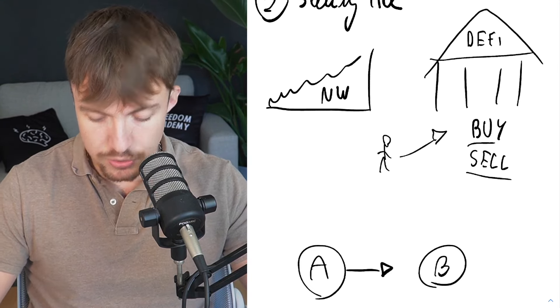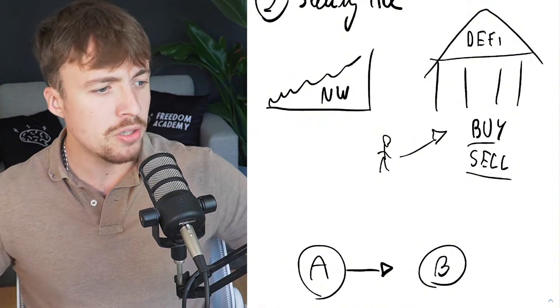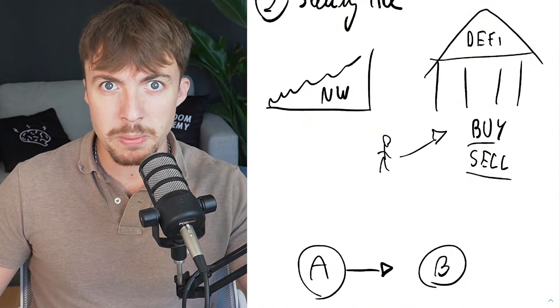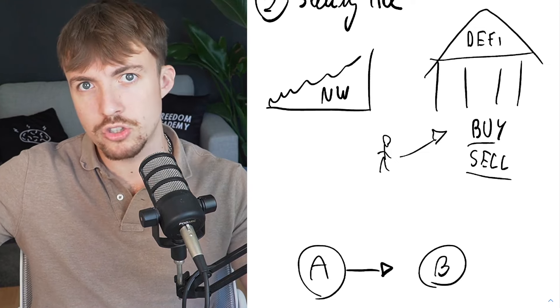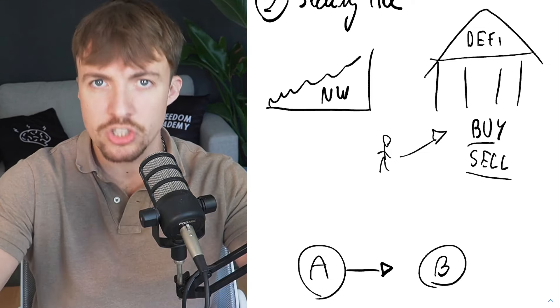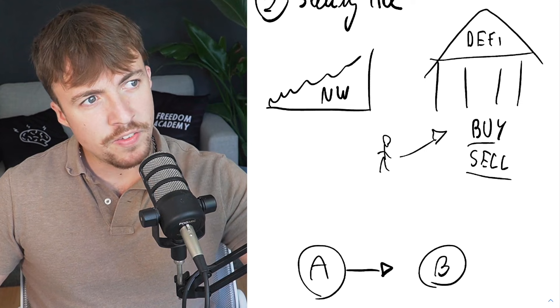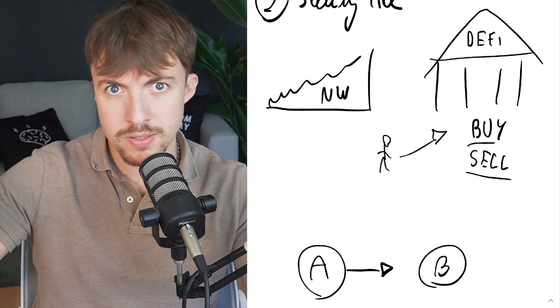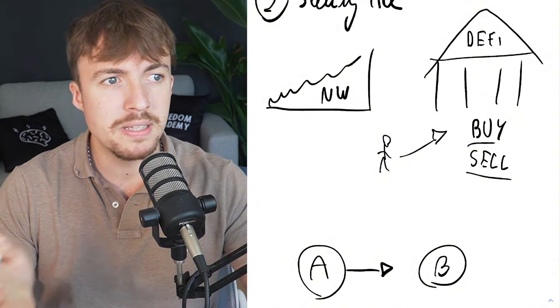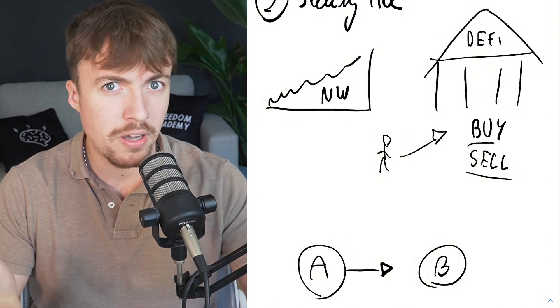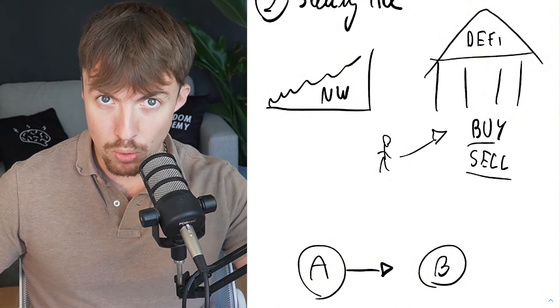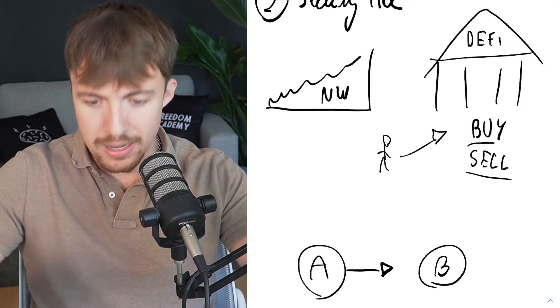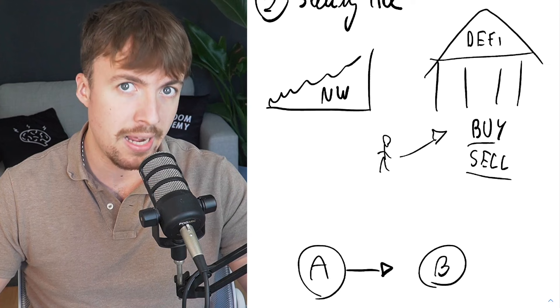People need liquidity, they need money in the markets for you to be able to execute the transfer. If you want to go from asset A to asset B, imagine to put this simple, imagine there's a guy that sells oranges in Spain and a guy that has rice in Belgium and they meet on a Spanish island. There's sufficient amount of oranges but the Belgians don't have sufficient amount of rice.